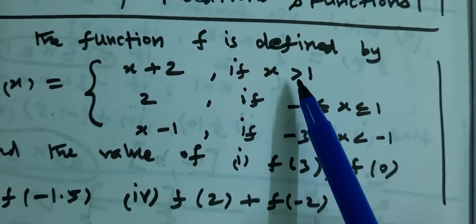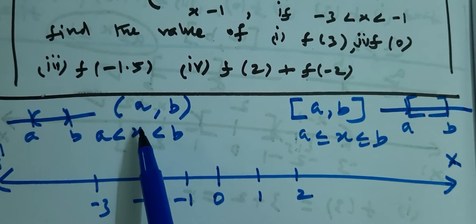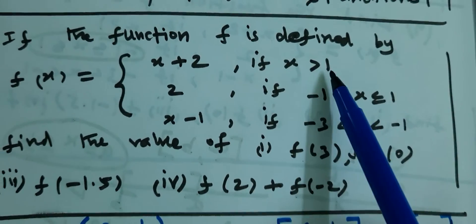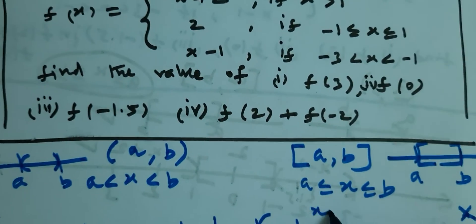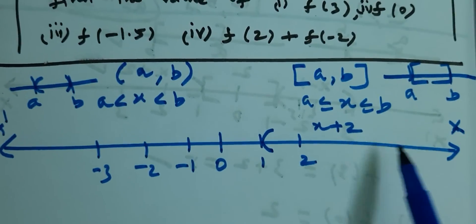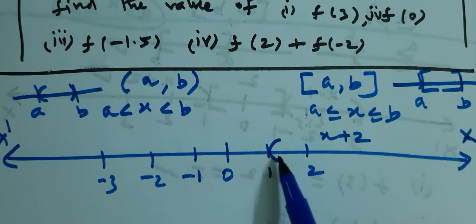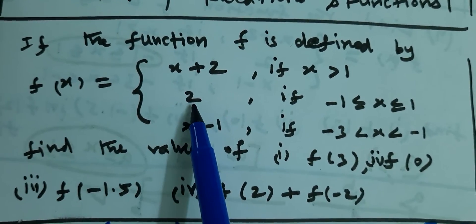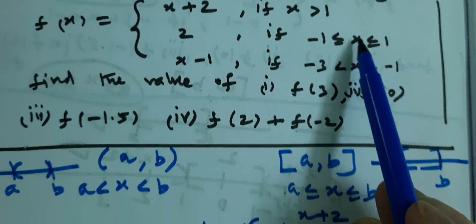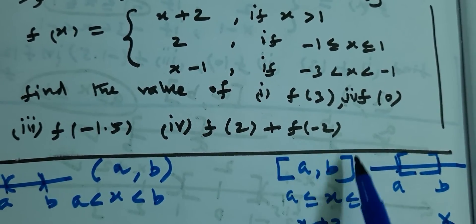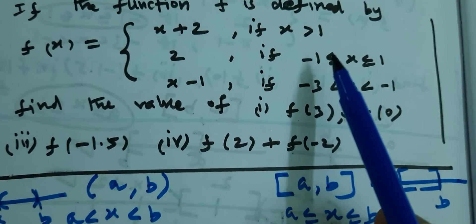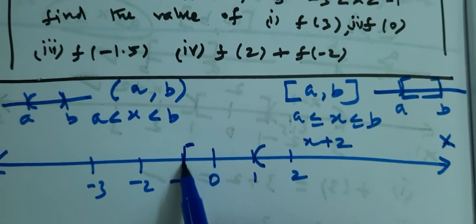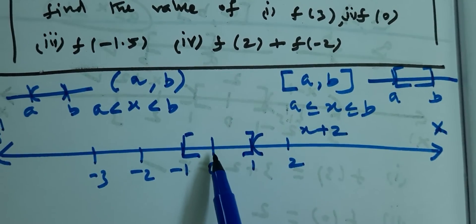If an open bracket is used with greater than or less than, you must use the equal-to sign for the closed bracket. For the condition from minus 1 to plus 1 with equal-to signs on both sides, f of x will be true. The interval is from minus 1 to plus 1, which is a closed interval — closer bracket, closer interval.